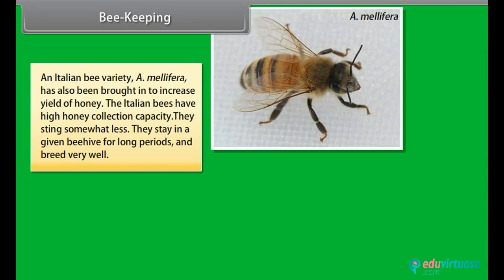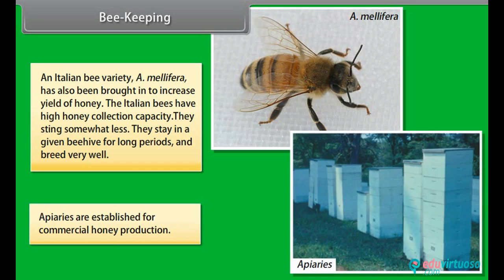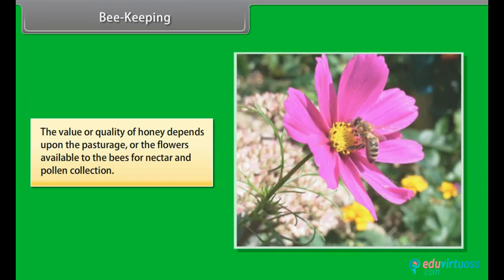An Italian bee variety, A. mellifera, has also been brought in to increase the yield of honey. The Italian bees have high honey collection capacity, sting somewhat less, stay in a given beehive for long periods and breed very well. Apiaries are established for commercial honey production. The value or quality of honey depends on the pasturage, meaning the flowers available to the bees for nectar and pollen collection.